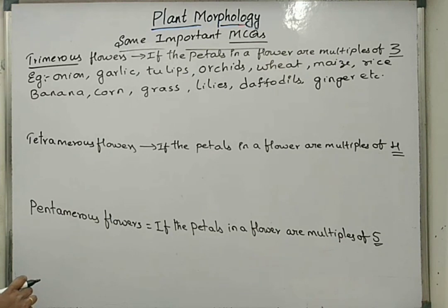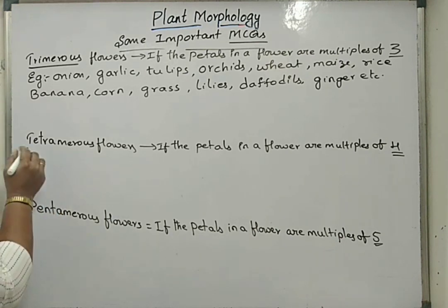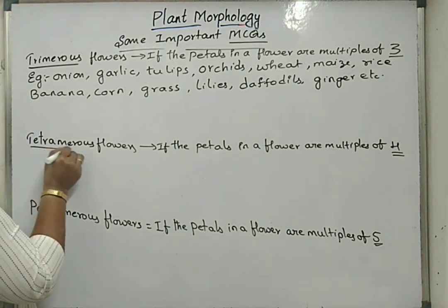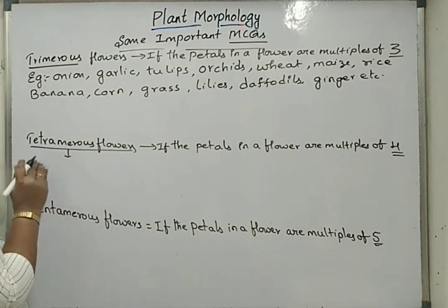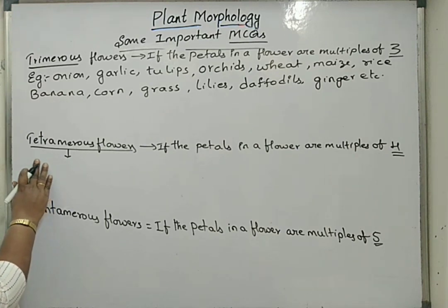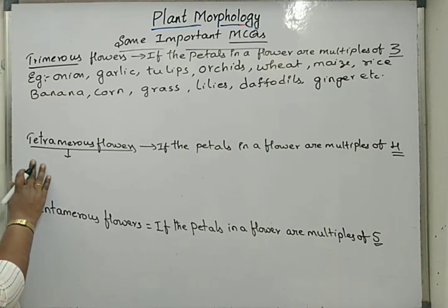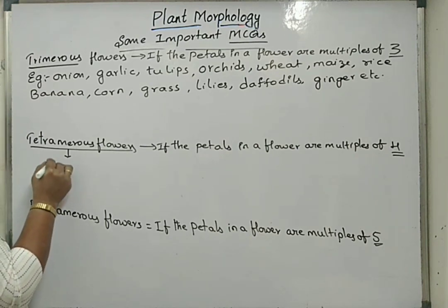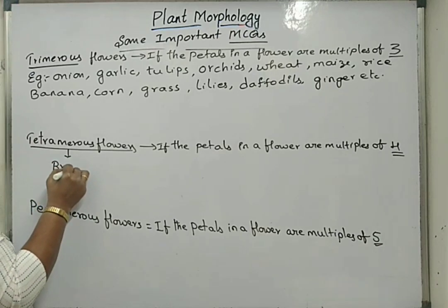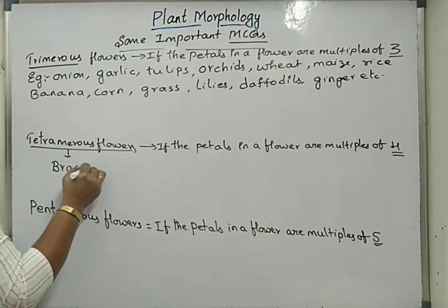Under tetramerus types of flowers, this condition of having multiples of four petals is seen in the case of Brassicaceae members.